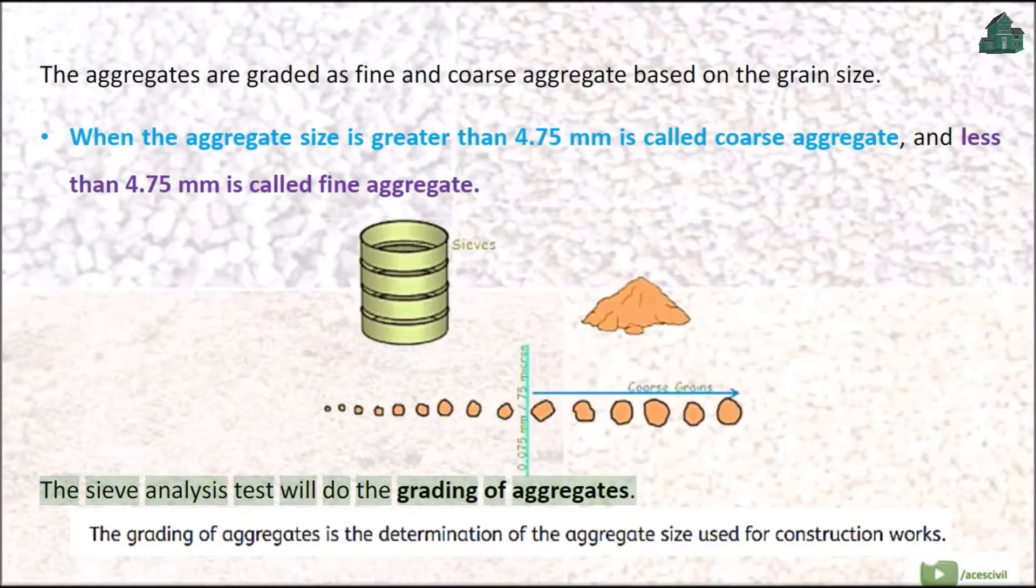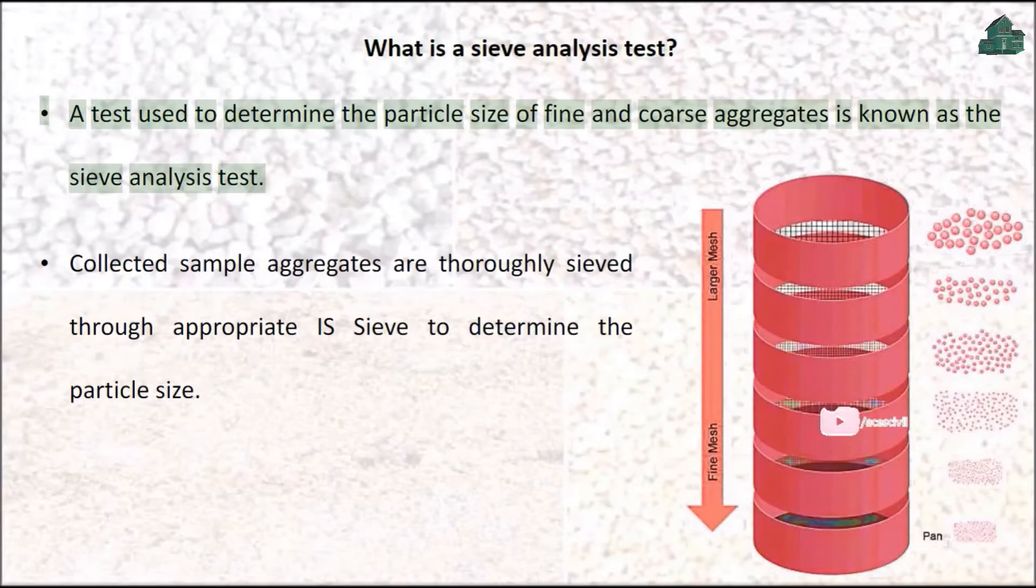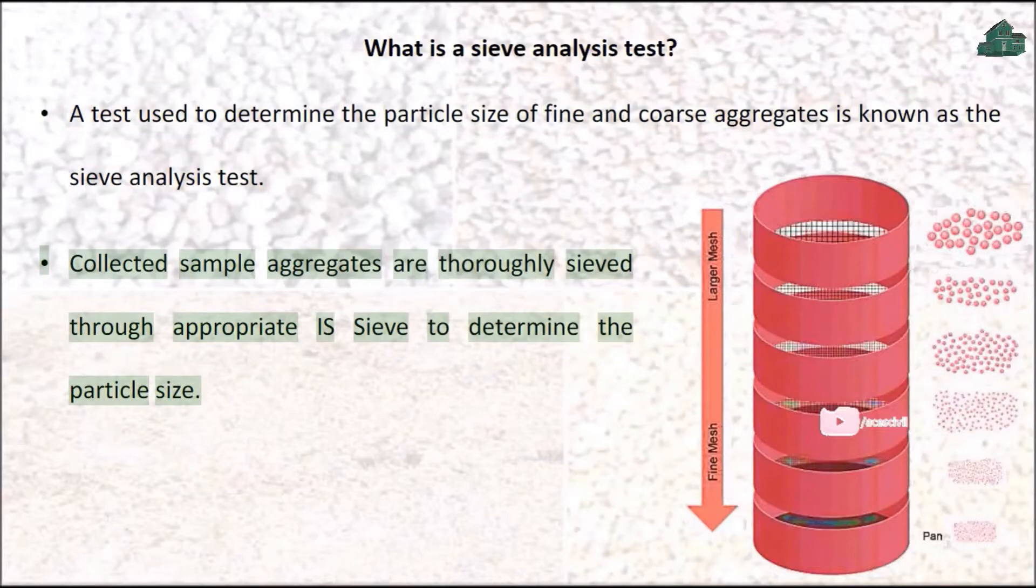The sieve analysis test will do the grading of aggregates. What is a sieve analysis test? A test used to determine the particle size of fine and coarse aggregates is known as the sieve analysis test. Collected sample aggregates are thoroughly sieved through appropriate IS Sieve to determine the particle size.